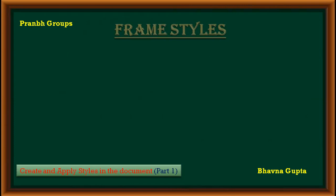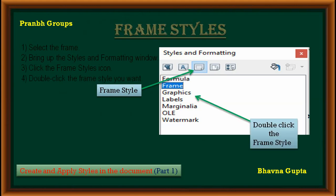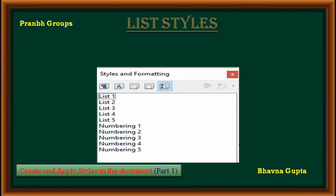Next is frame style. When you insert an object into a document, it will automatically have a frame. To apply a frame style: first, select the frame, then bring up the Style and Formatting window, click the frame style button, and then double-click the frame style you want.